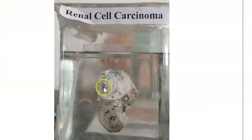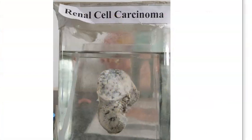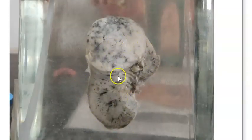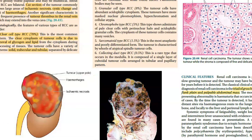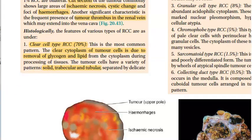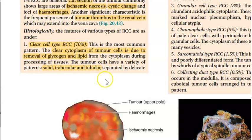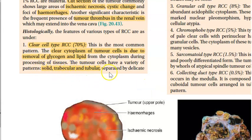Looking at the gross specimen from the lab, you can see hemorrhage, ischemic necrosis, and cystic change. Before cutting, the tumor should appear large and golden yellow at the upper pole - solitary and unilateral. In microscopy, the clear cell type shows clear cytoplasm due to removal of glycogen and lipid, with solid, trabecular, and tubular patterns.